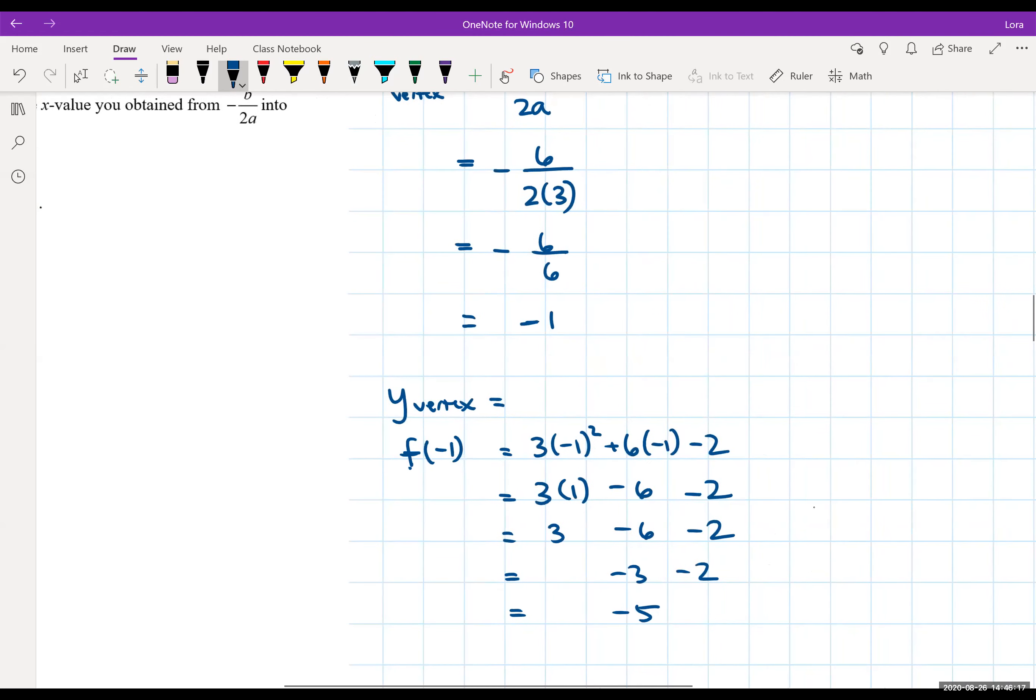So you could show your work or you can just restate, hey, the vertex is negative 1 negative 5. So we should be good to go. And we want to check maybe, does it match with our previous findings from completing the square? Or vice versa. So let's double check. So that's the answer to this.